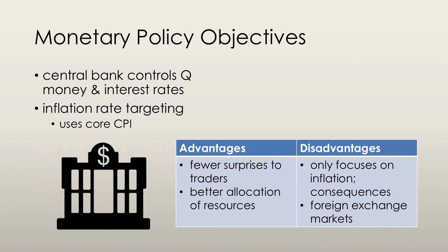Inflation rate targeting is a monetary policy strategy in which the central bank sets a specific inflation target and conducts its monetary policy accordingly. Core CPI is used as the measure for inflation for the purposes of conducting monetary policy. Core CPI, as opposed to the regular CPI, does not include volatile elements in the index such as food and fuel. This provides a slightly better prediction of inflation.